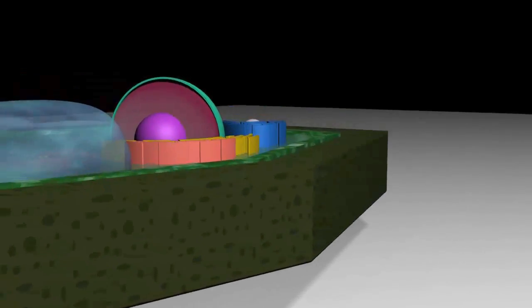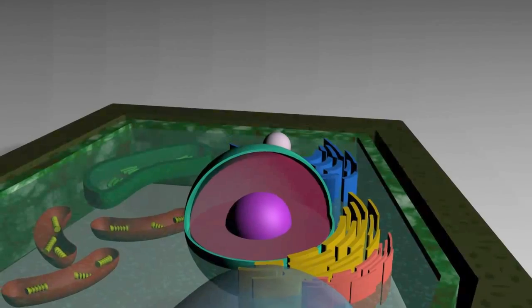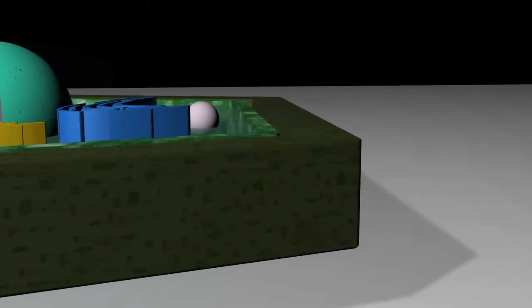As we move further into the cell, you'll notice very important differences between the animal cell and this plant cell. Starting just under the cell wall, there is an additional wall-like structure called the cell plasma membrane.